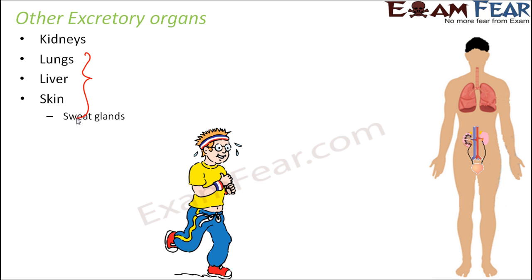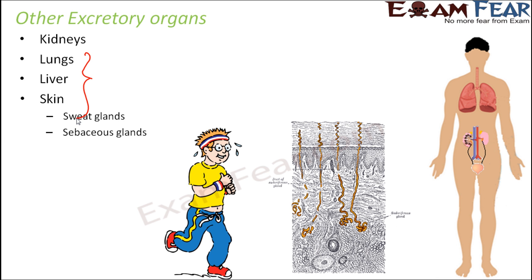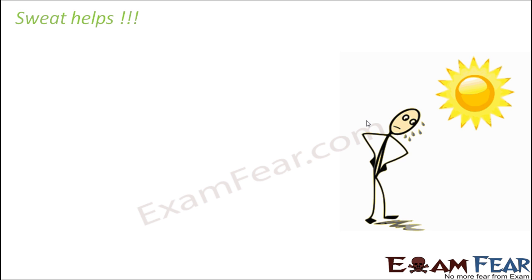When we sweat — for example, when we are very tired or on a hot summer afternoon — we tend to sweat a lot. Sweat is a watery fluid seen on the surface of our body, and it is one way of excreting substances, because sweat contains a lot of salts and unwanted materials. The sebaceous glands, or oil glands, also secrete oil to the skin's surface through tubes, contributing to excretion via the skin.